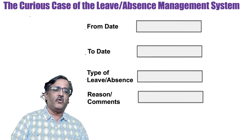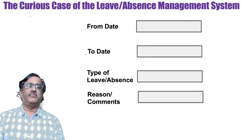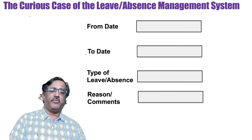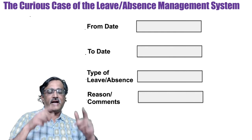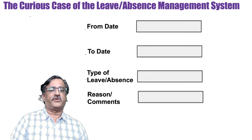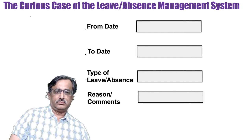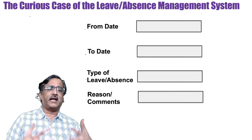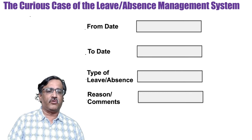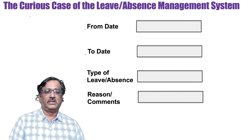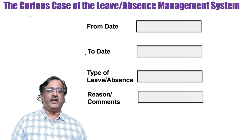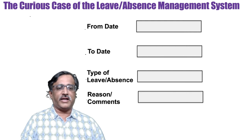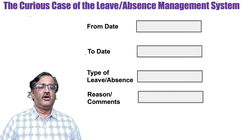Let us go back to IT and look at the same leave system I covered last time. I have seen cases where the type-of-leave field had almost 20 options in the drop-down. Why did the designers do that? Because they couldn't exactly predict which type of leave somebody is going to take. In a large organization, all 20 may be used at some point in time, so they had to provision for all of it.